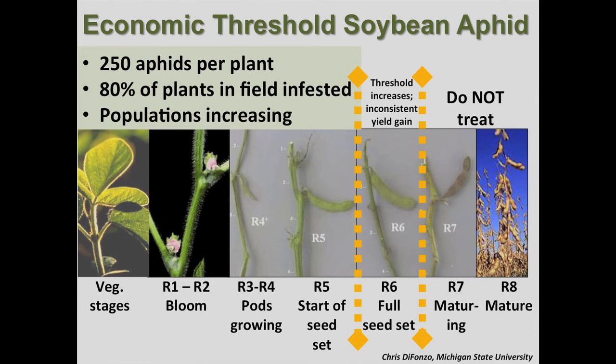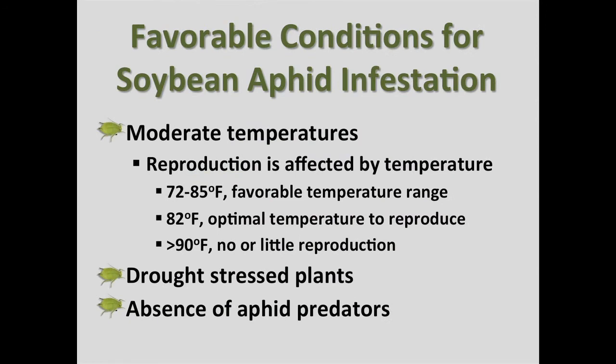Once the soybean reaches the full seed set R6, research has not shown a reliable yield gain from insecticide treatment. Conditions that favor aphid population growth are cool temperatures in the high 70s to low 80s, plant stress like drought stress, and the lack of aphid predators.